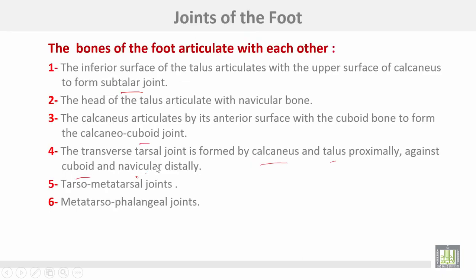The joints of the foot: the bones of the foot articulate with each other. First, the inferior surface of the talus articulates with the upper surface of the calcaneus to form the subtalar joint. Second, the head of the talus articulates with the navicular bone. The calcaneus articulates at its anterior surface with the cuboid bone to form the calcaneocuboid joint.